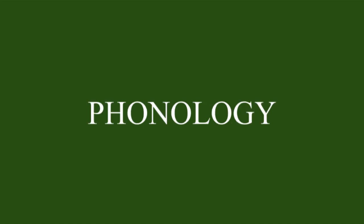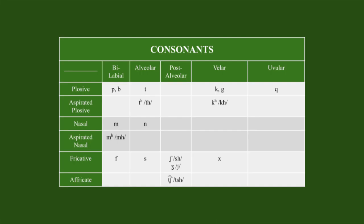Now, what kind of conlang video would it be if we didn't start with the consonant chart? It's a bit interesting today, but if you think I'm going to properly pronounce half of these, you're dead wrong. The consonants include P, B, T, K, G, K, T, K, M, N, M, K, F, S, SH, J, H, and CH. So, as you can see, the consonants are simplistic-ish.